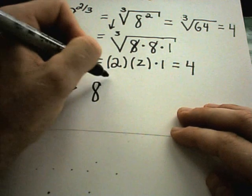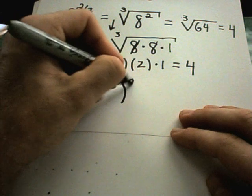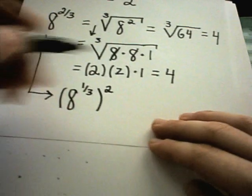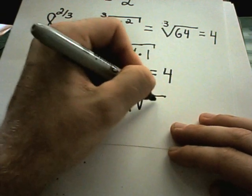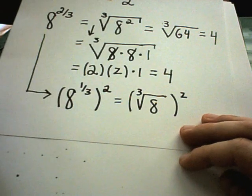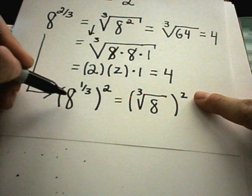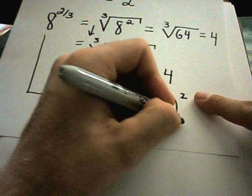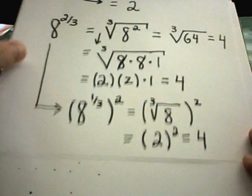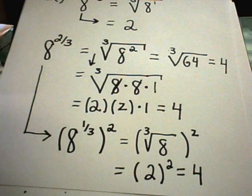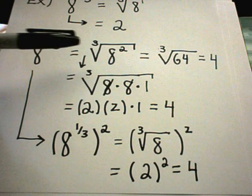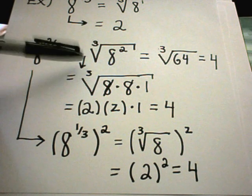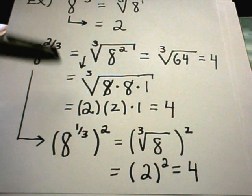Another important example: you can write 8 to the 2/3 as 8 to the 1/3 squared using properties of exponents. If it's in parentheses, you multiply. This says find the cube root of 8 and then square that number. The cube root of 8 is 2, and 2 squared is 4. Three different ways to get an equivalent answer. If you're shaky with radicals or learning them for the first time, I encourage you to go through these examples and convince yourself you could do these any way. Very useful to manipulate radicals and exponential notation.